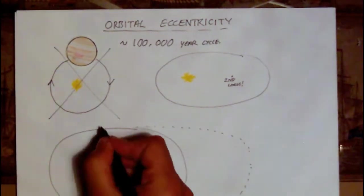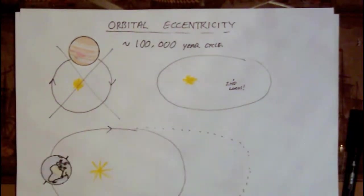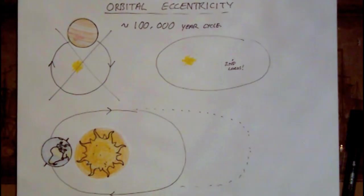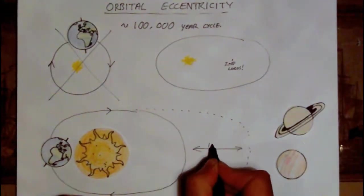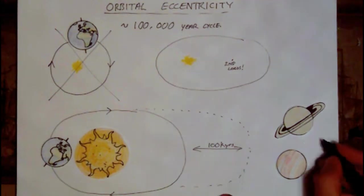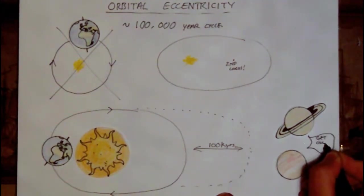Over time, the Earth's orbit moves from a more circular one to a more elliptical orbit and back again as a result of gravitational interactions with the larger bodies of the solar system, those being Jupiter and Saturn.